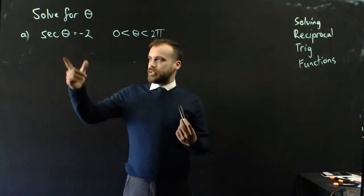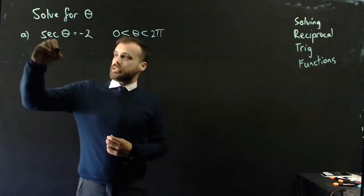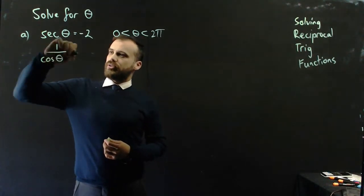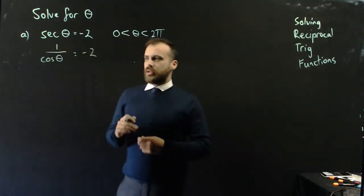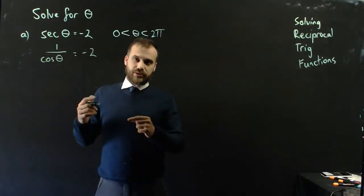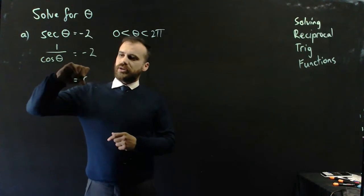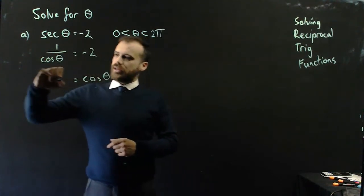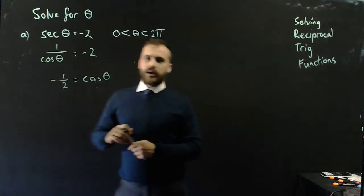Now, we need to understand that sec theta is equal to 1 on cos theta. We can multiply both sides by cos theta and divide both sides by negative 2, which would give us cos theta equals negative 1 half.